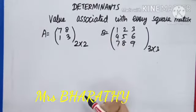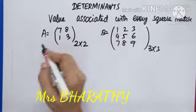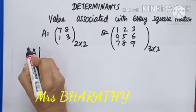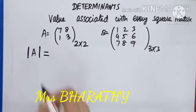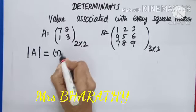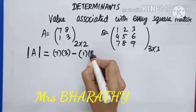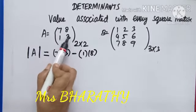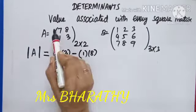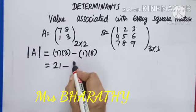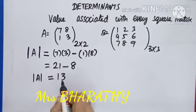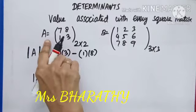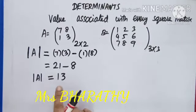Let me call two matrices A and B. To find the determinant of A, we use a specific notation: put A within two vertical lines — that is determinant of A. To find it, multiply the diagonal elements and subtract: 7 into 3 minus 1 into 8. That gives 21 minus 8 equals 13. So determinant A is a number, not a matrix. You can only find this value for square matrices.